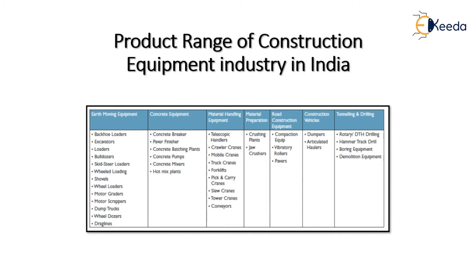Concrete equipment also includes hot mix plants. Under material handling equipment, there are different types of cranes: crawler cranes, mobile cranes, truck cranes, pick-and-carry cranes, tower cranes, and conveyors. Under material preparation, we have crushing plants and jaw crushers. Road construction equipment includes compaction equipment, vibratory rollers, and pavers. Construction vehicles include dumpers and haulers. Tunneling and drilling equipment includes rotary drills, hammer drills, boring equipment, and demolition equipment.